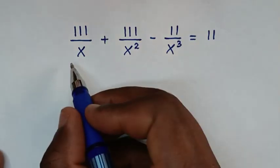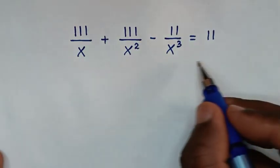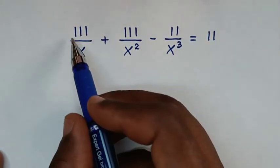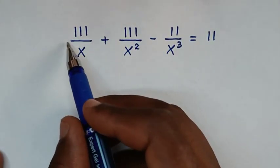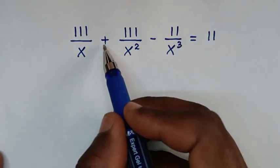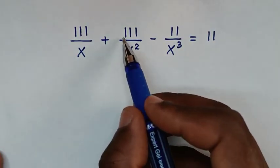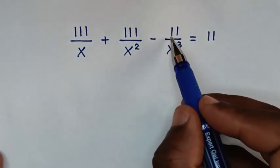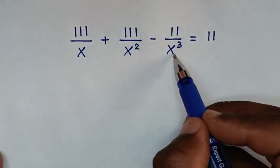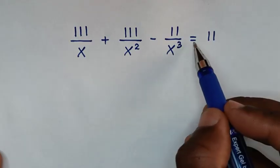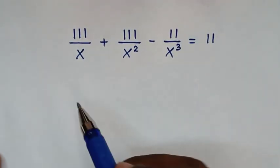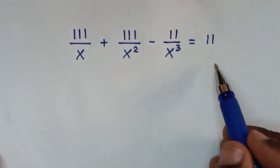Hello, you are welcome to solve this math problem which is 111 over x plus 111 over x squared minus 11 over x power 3 is equal to 11. We need to find the values of x from this equation.